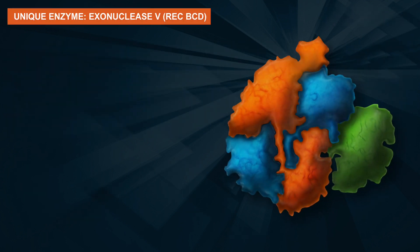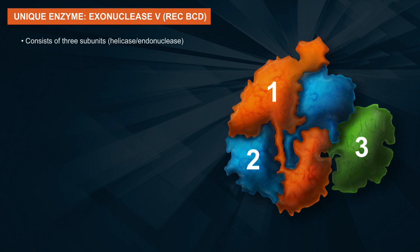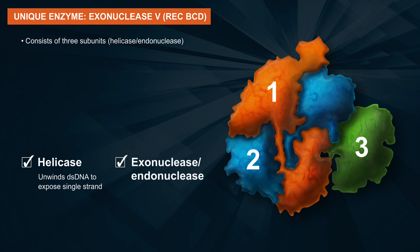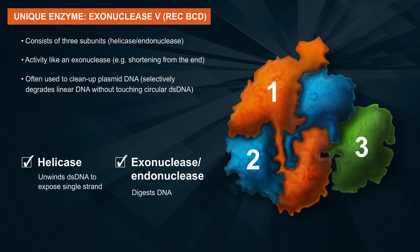A unique enzyme is Exo5, also known as RecBCD. This enzyme consists of three subunits and includes helicase activity that unwinds double-stranded DNA to expose single-stranded DNA, as well as single-stranded exo and endonuclease activity which digests the DNA. The end result is activity like an exonuclease — for example, shortening from the end. This enzyme is often used to clean up plasmid DNA because it selectively degrades linear DNA without touching circular DNA.